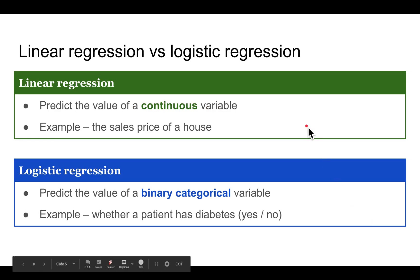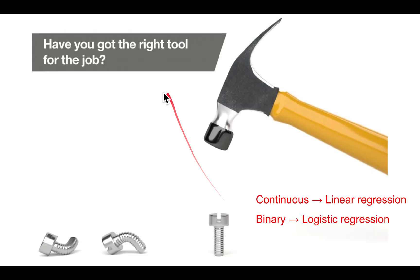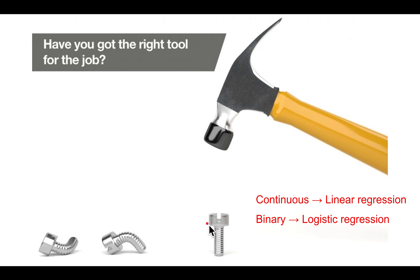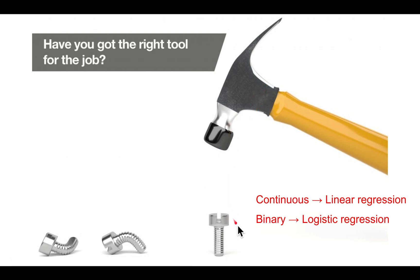So just to summarize: linear regression allows you to predict the value of a continuous variable, whereas logistic regression is useful when you're trying to predict the value of a binary categorical variable. So make sure you have the right tool for the job — don't use a hammer when what you have isn't nails. This is definitely not the right tool for this job.